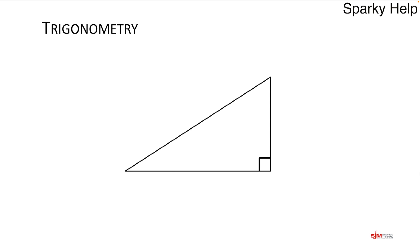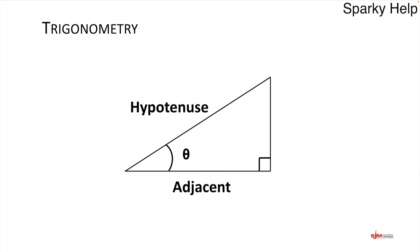So let's have a look at trigonometry, first of all, just to refresh our memories. We take a right-angle triangle, and we have an angle which we call theta. The side next to the angle we call the adjacent. The diagonal, the longest side of the triangle, we call the hypotenuse. And the side opposite the angle is called the opposite.